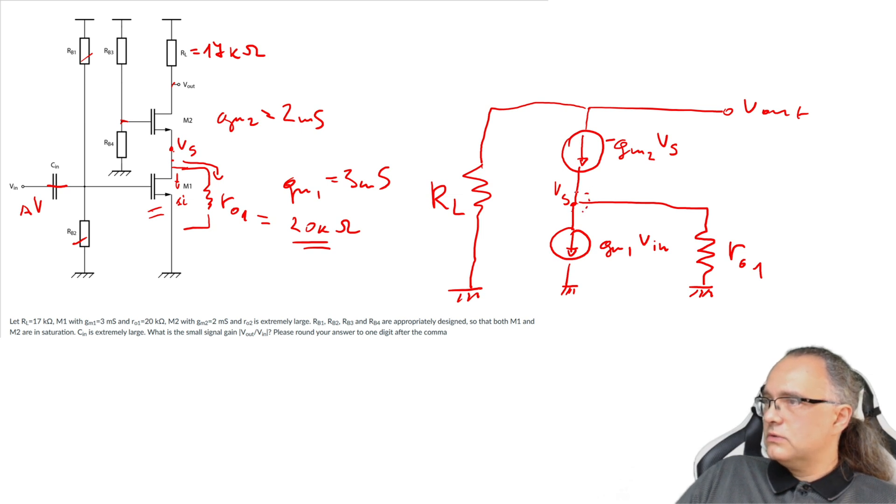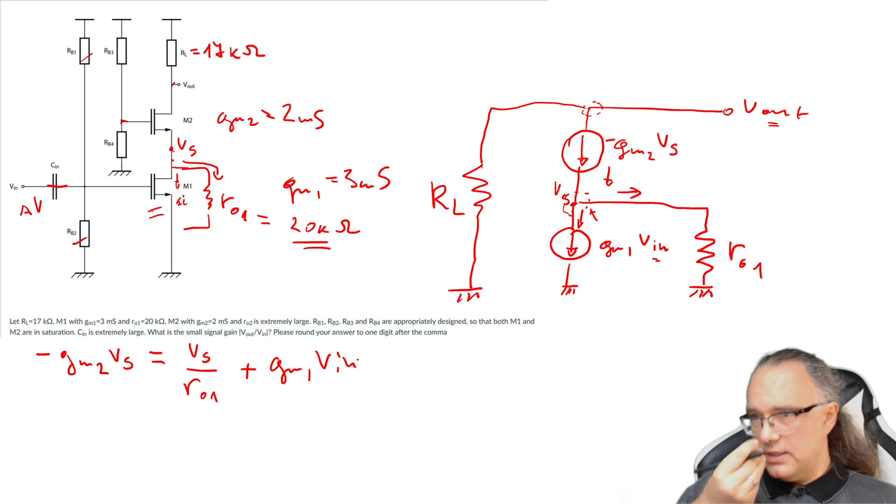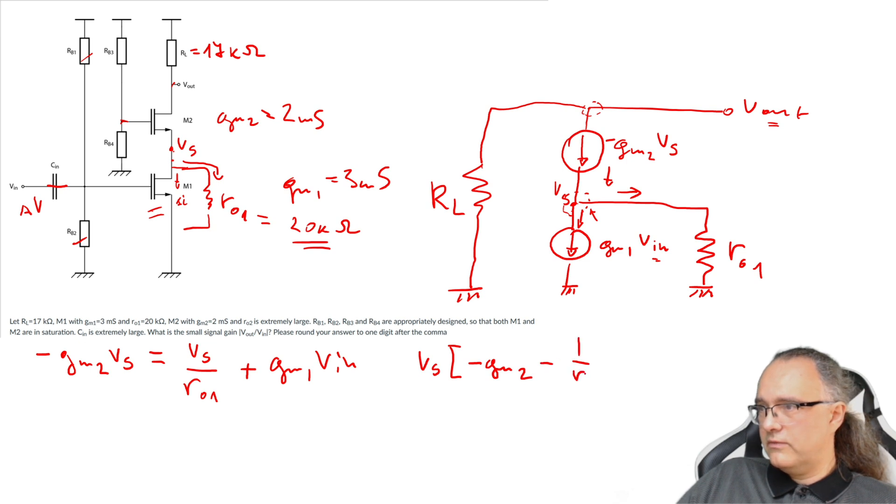So I have now two nodes this node and this node and my goal is to express Vout and Vin in one equation. Two nodes will allow me to write Kirchhoff current law two times and then avoid Vs. So let's start here. So this current is equal to this current plus this current. So let me write Vout minus Gm2·Vs is equal to Vs divided by Rout1 plus Gm1·Vin. So from here I should be able to express Vs.